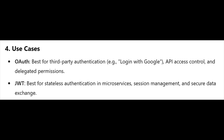Use cases — OAuth is best for third-party authentication; for example, login with Google, API access control, and delegated permissions. JWT is best for stateless authentication in microservices, session management, and secure data exchange.